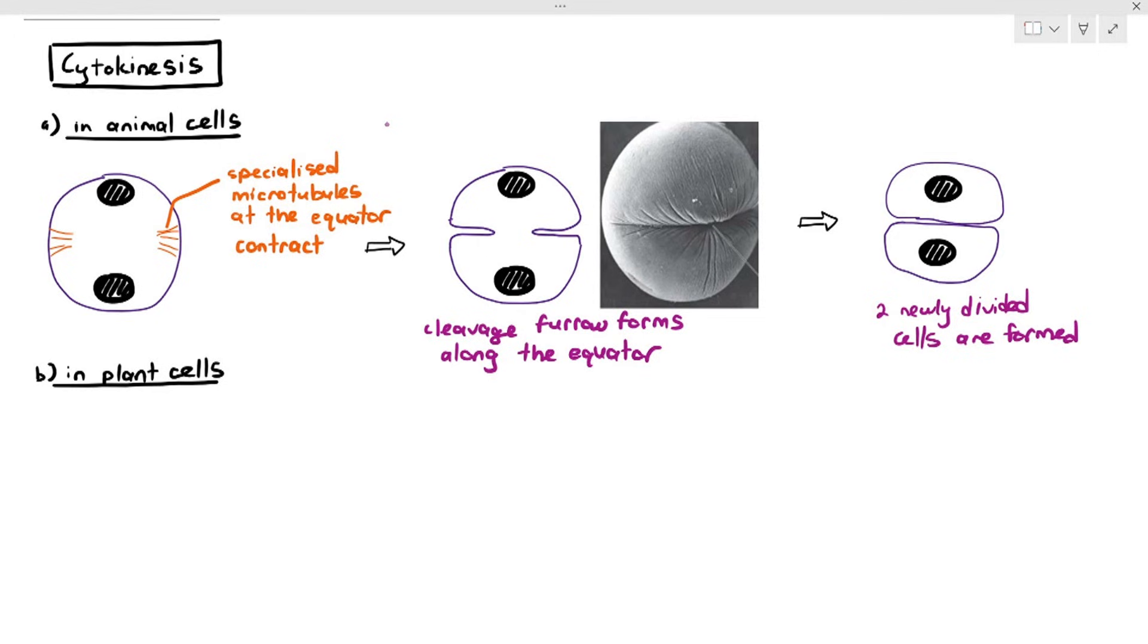For the purpose of the exam, you just have to mention microtubules at the equator contract, forming a cleavage furrow along the equator, which will then eventually lead to the formation of two newly divided cells.